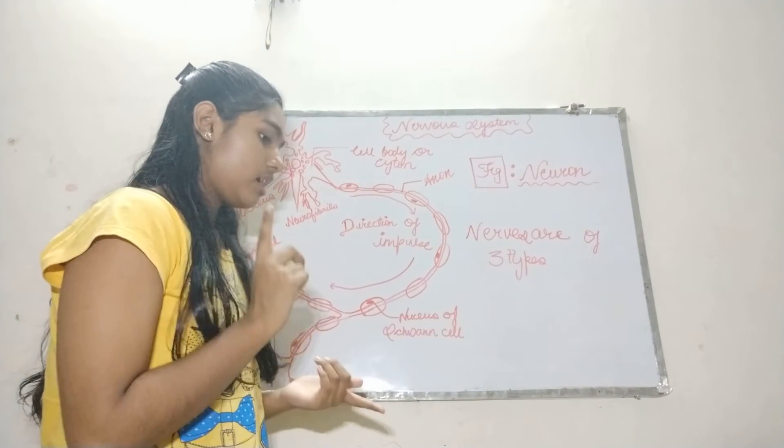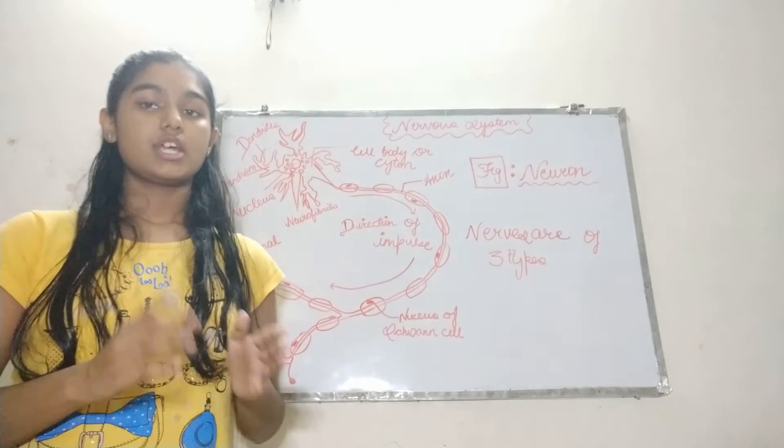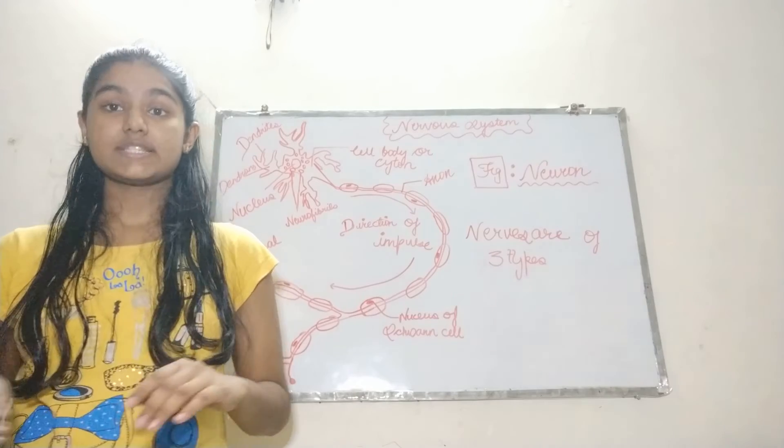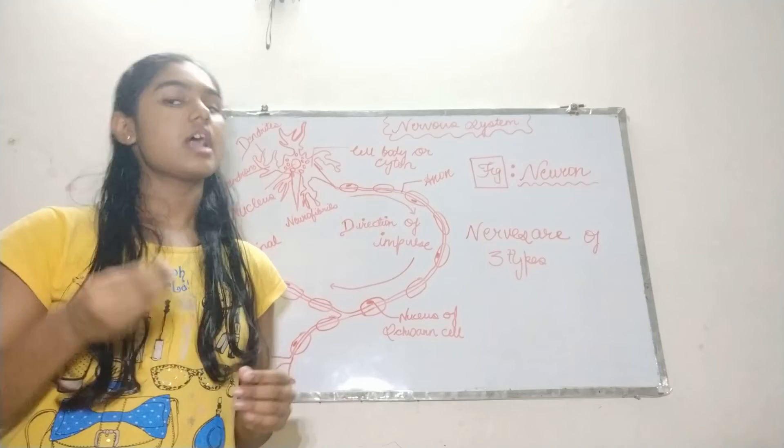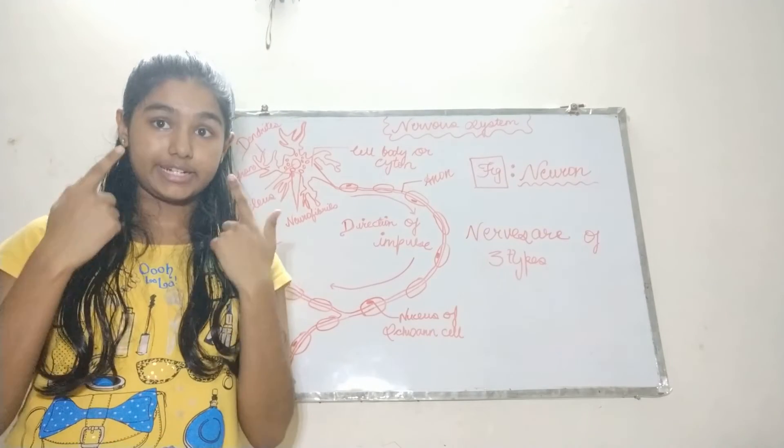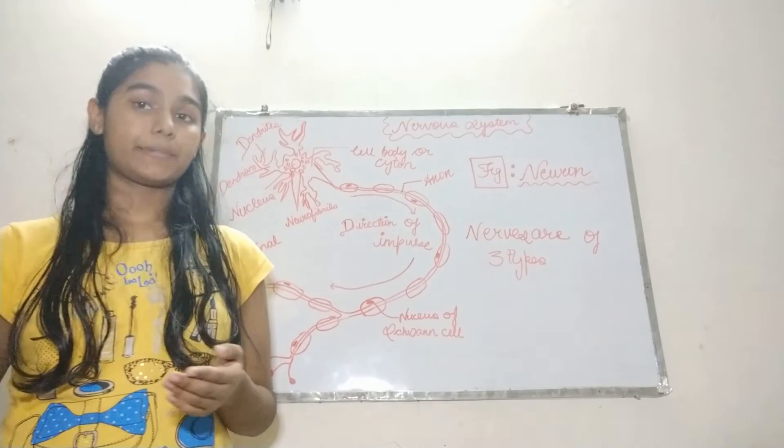According to function, there are three types of nerves. First is sensory nerves. What are sensory nerves? These nerves carry the impulses from the receptors to our central nervous system. For example, our optic nerves related to our eyes. These are nerves of our eyes called optic nerves.